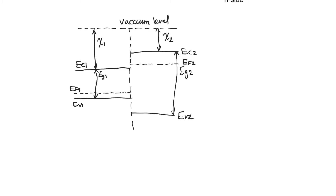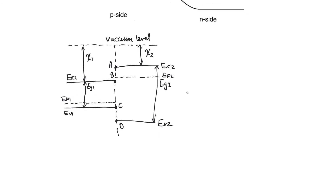We notice immediately that this band diagram is not a thermal equilibrium band diagram, because we have two Fermi levels: EF1 and EF2. At thermal equilibrium, we must have a single Fermi level. So we mark the points where the band edges touch the interface — points A, B, C, and D — and ask how we migrate from this non-equilibrium diagram to an equilibrium one. We need a constant Fermi level, which in this case lies somewhere between EF1 and EF2.